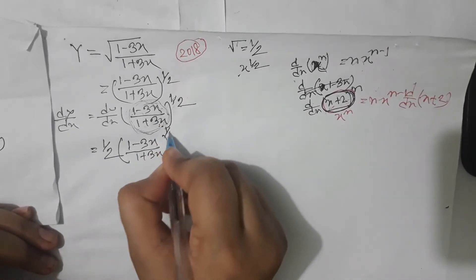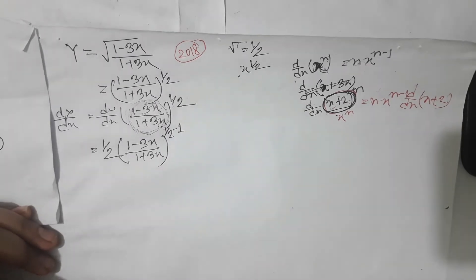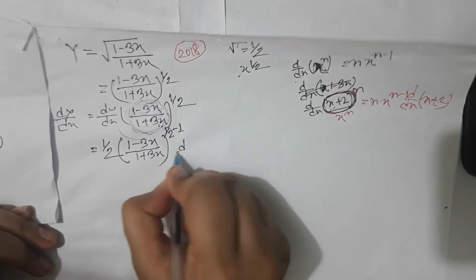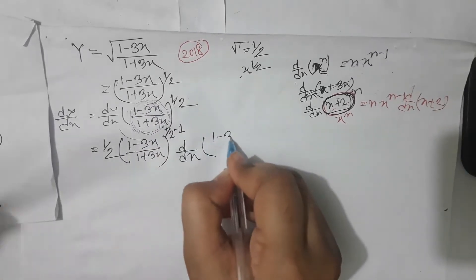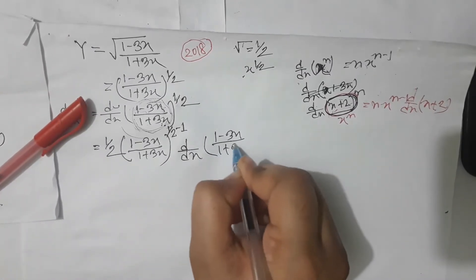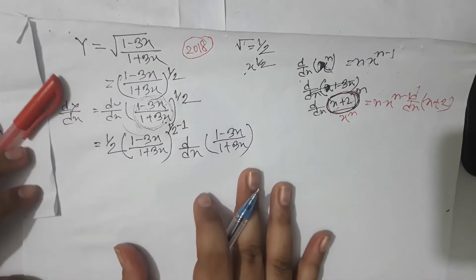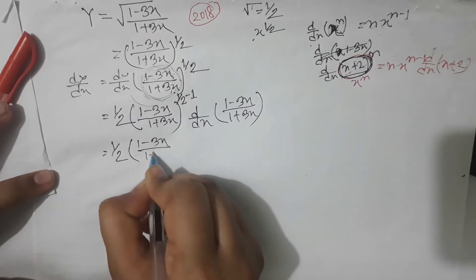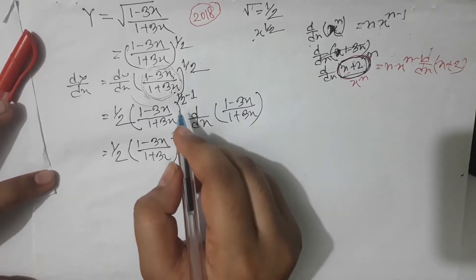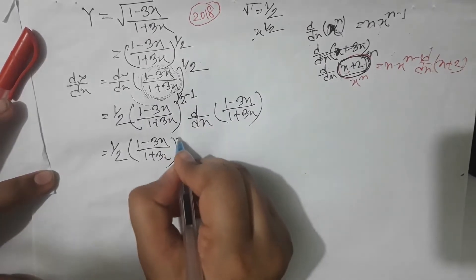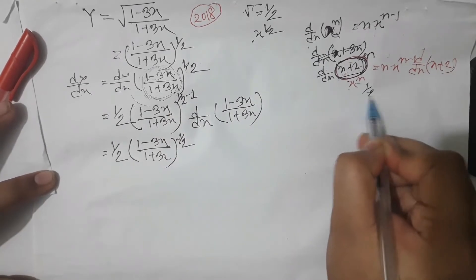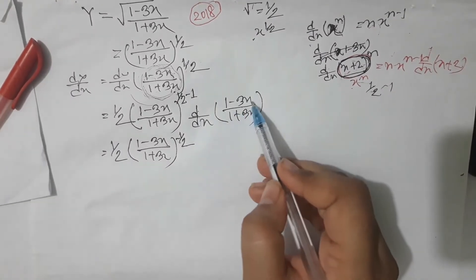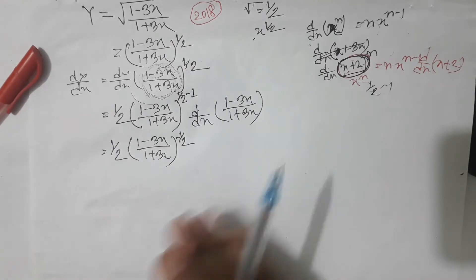So n into x to the power n minus 1 — that means half minus 1. Now we apply this: d/dx of 1 + 3x. We build the full expression with d/dx applied to each part — 1 plus 3x, then d/dx.